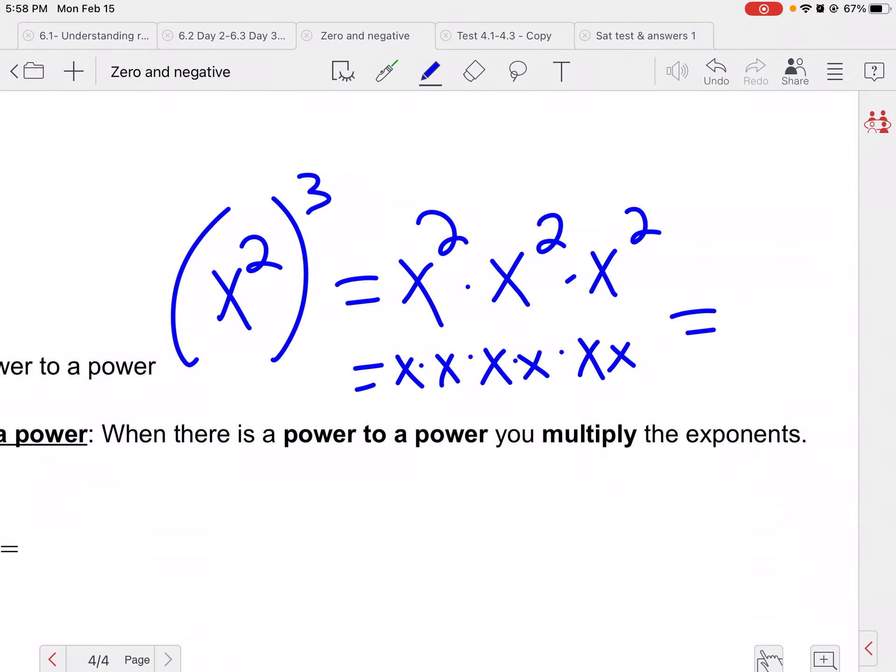Well, I know x squared is really x times x, and this x squared is x times x, and this... so conveniently we ended with x to the one, two, three, four, five, six, right?